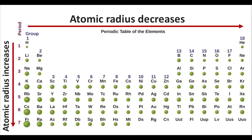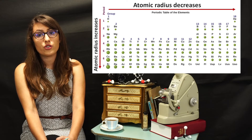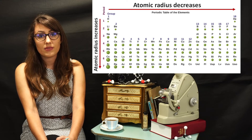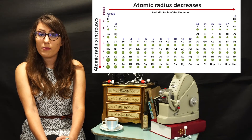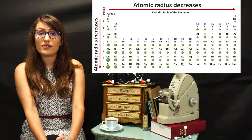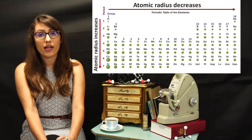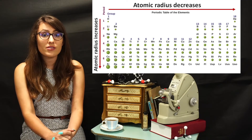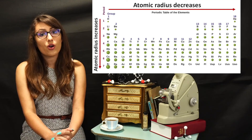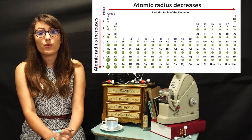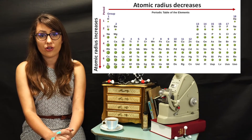As you move down a group, the effective nuclear charge is minimally affected, because even though you are increasing the number of core electrons, you are also increasing the nuclear charge, which compensates. However, as you move down the periodic table, your atomic radius increases, because you are increasing the number of shells in your atom. It is important to note how atomic radius is affected across the periodic table and how it relates to the effective nuclear charge.